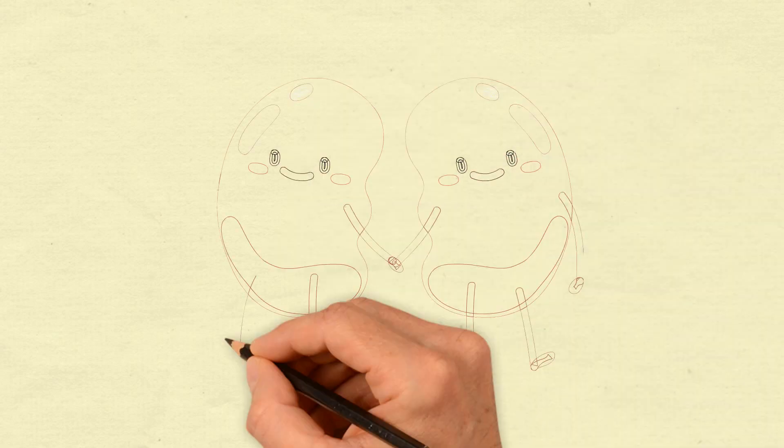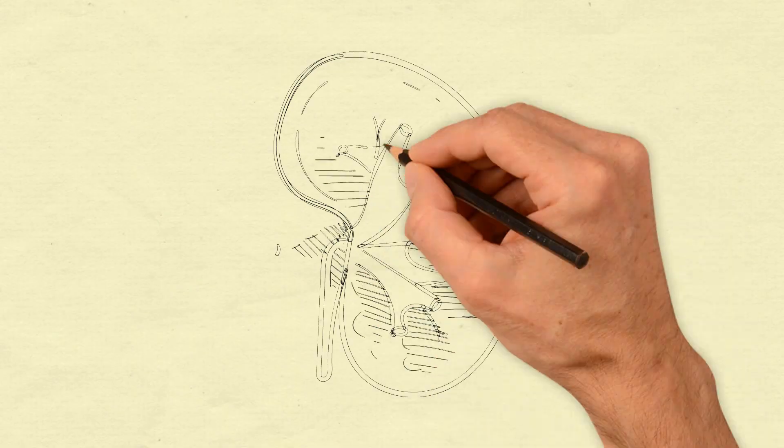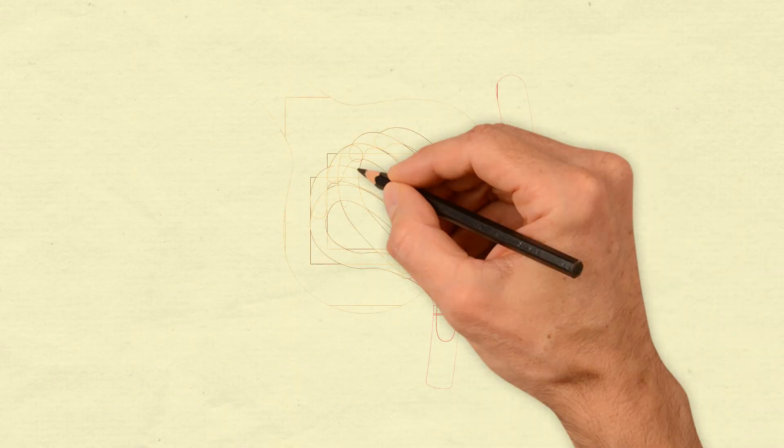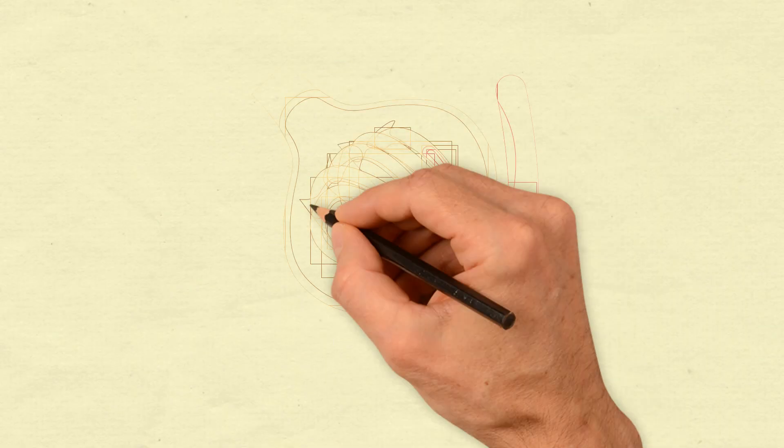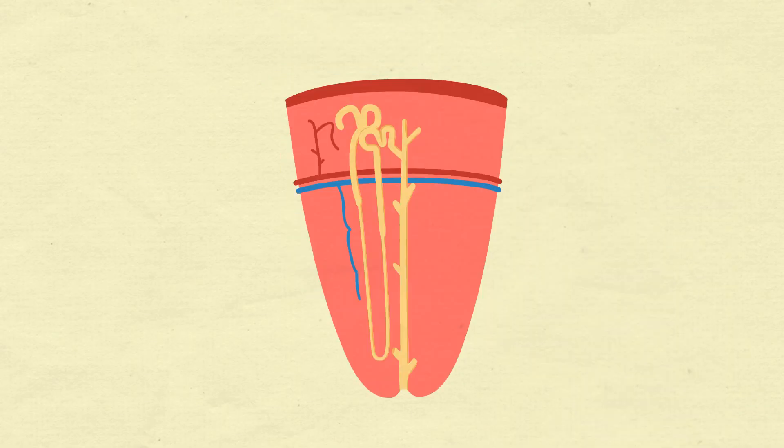Your kidneys are incredible organs. Inside each of them are up to 1.2 million nephrons, the tiny yet powerful structures that filter waste and excess fluids from your blood. Think of nephrons as the building blocks of kidney function.